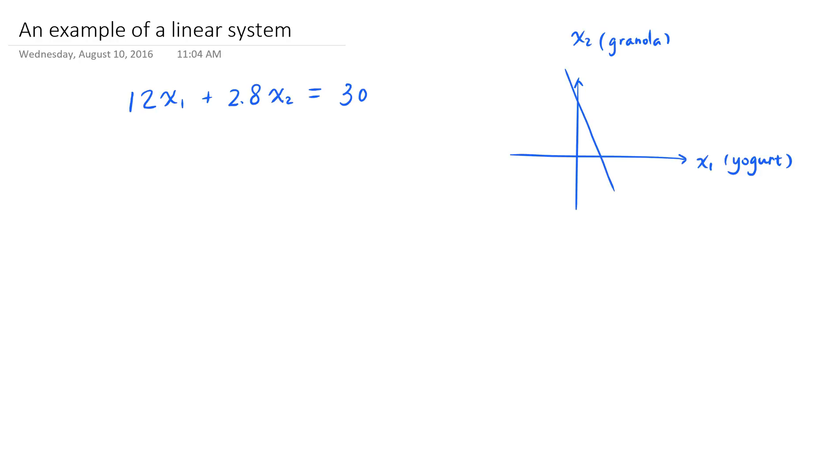In fact, the set of its solutions are the ordered two tuples, x sub 1, x sub 2, that correspond to all the points on the straight line in the two-dimensional plane.